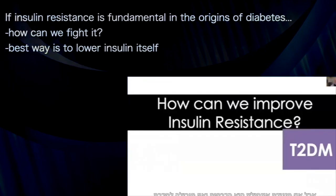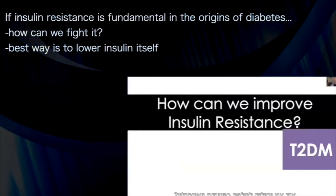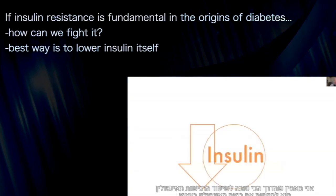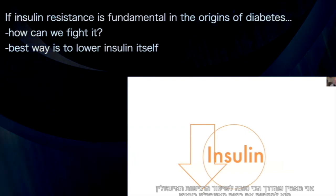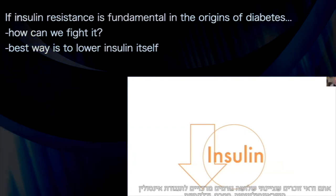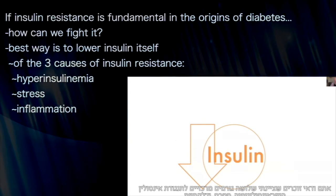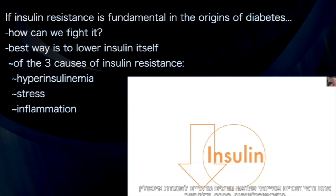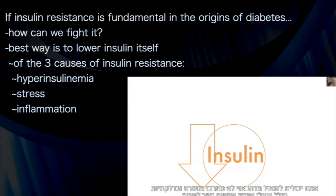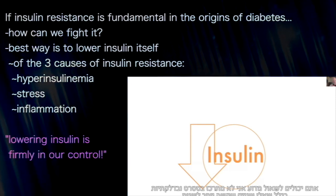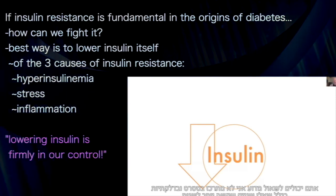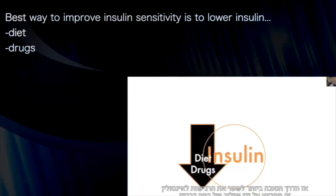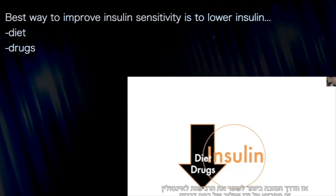If insulin resistance is fundamental to the etiology of diabetes, how can we fight it? I strongly believe that the best way to improve insulin resistance is to lower insulin itself. I emphasized three primary causes of insulin resistance: hyperinsulinemia, stress, and inflammation. The reason I focus on hyperinsulinemia is that stress and inflammation are harder to manipulate. Insulin, I believe, is firmly in our control — and so the best way to improve insulin sensitivity is to lower insulin.